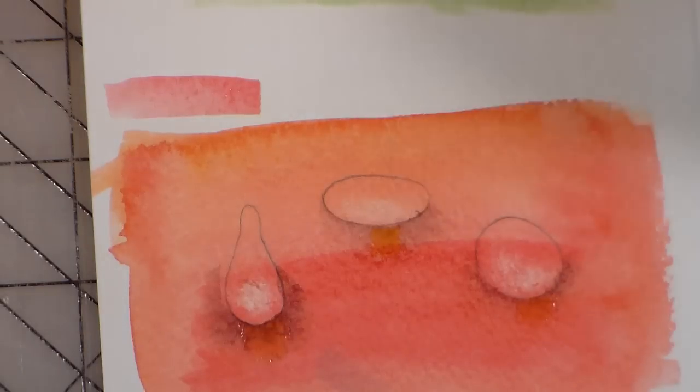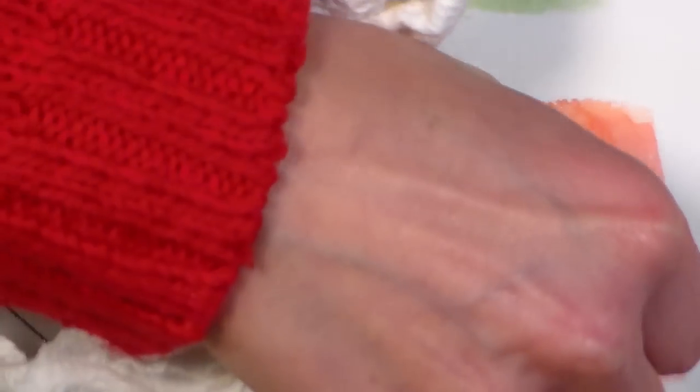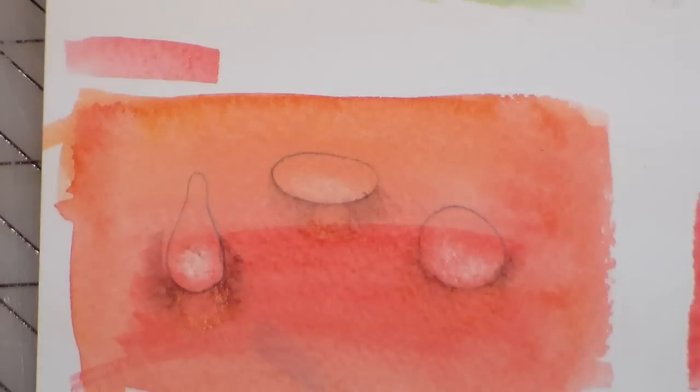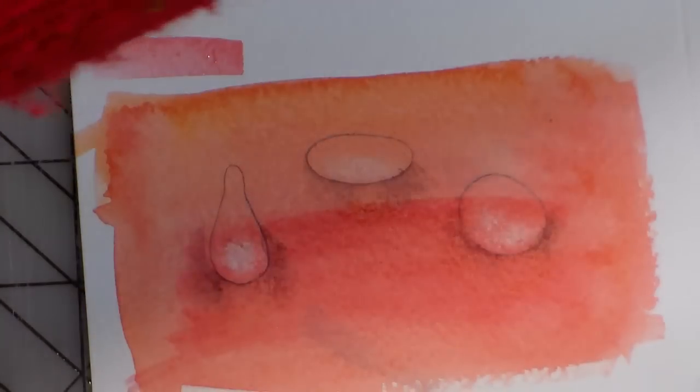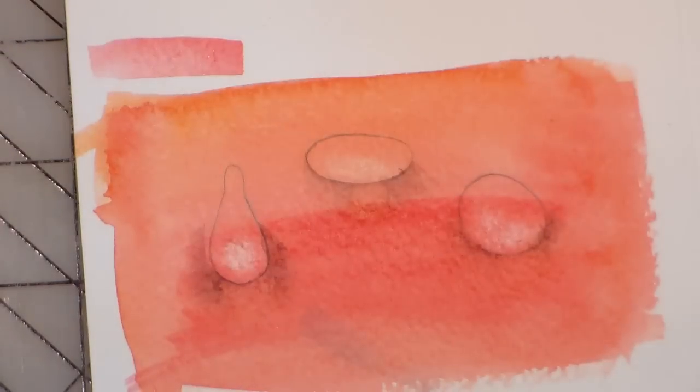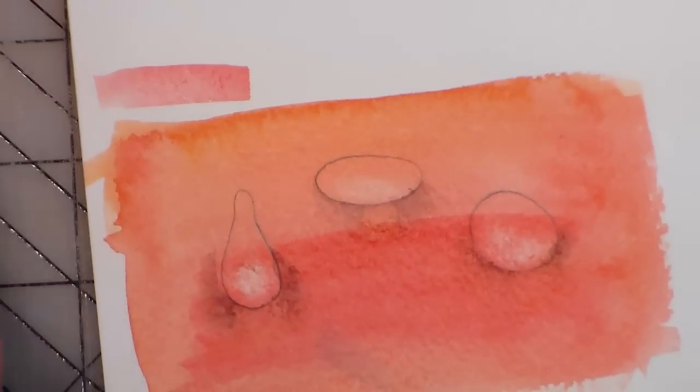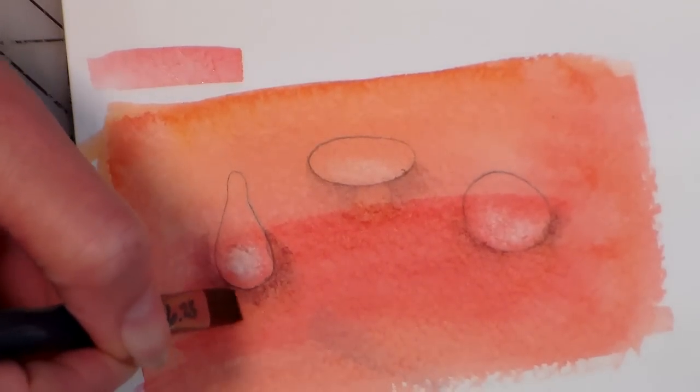You can even take a little q-tip which would be a lot easier, but I don't have one right handy, and you could actually lift out a little sparkle there while you're at it. I got a little out of hand over there, I'm gonna have to re-paint that one. I'm gonna show you how to enhance these with colored pencils too when we're done, because sometimes you just want to have it a little bit more defined.